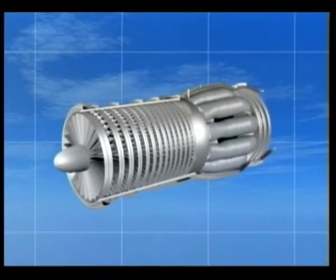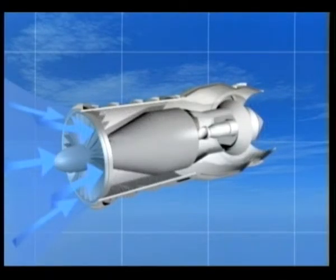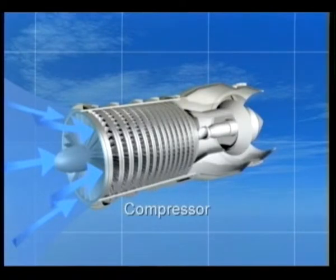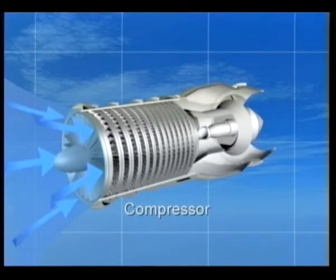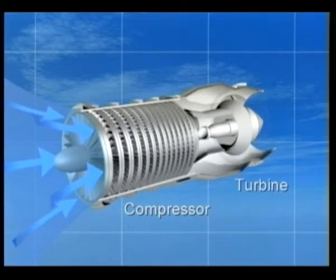In a gas turbine engine, the air is drawn through the intake by a compressor, which is attached to the main shaft. At the end of the shaft, the turbine is attached.